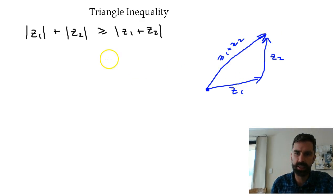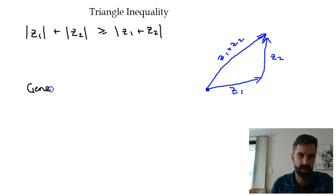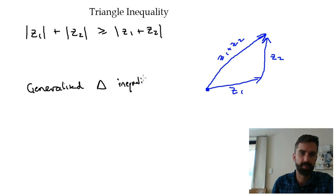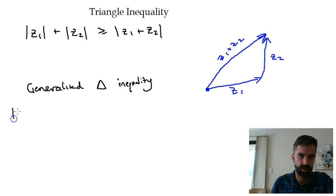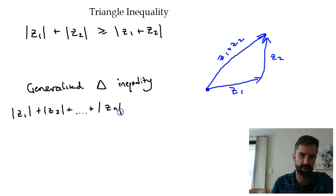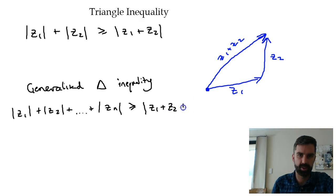So that's what the triangle inequality says. Now what we didn't really get a chance to look at is what I would call the generalized triangle inequality. That basically says that we can take this out to any number of complex numbers: z1 plus z2 plus a whole bunch of complex numbers up to z_n. If we add up all their moduli, that's going to be greater than or equal to the modulus of all of them added together.